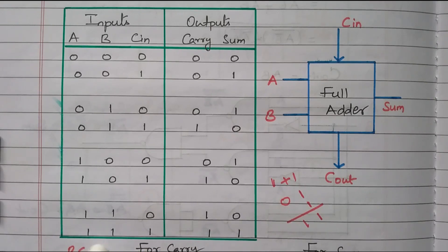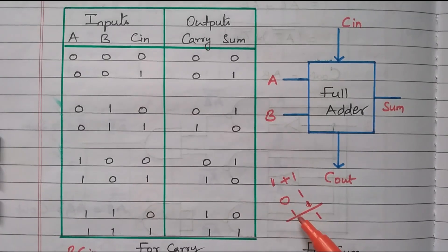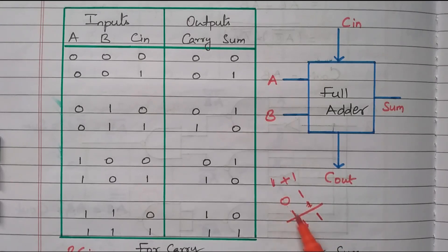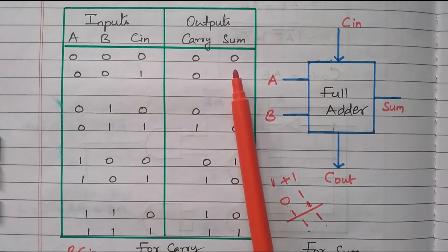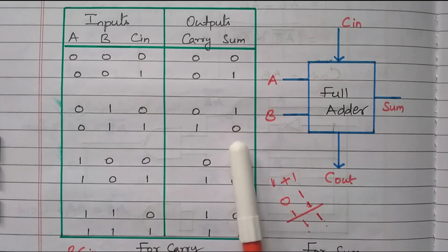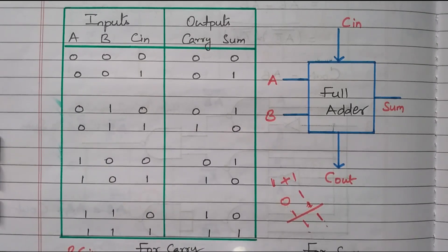When A=1, B=1, Cin=1 — all three are 1. Adding 1+1 gives sum=0, carry=1. Then we add that carry with the remaining 1: 0+1=1, and carry is also 1. So sum=1 and carry=1. Summary: all 0s → sum=0, carry=0; one 1 → sum=1, carry=0; two 1s → sum=0, carry=1; three 1s → sum=1, carry=1.